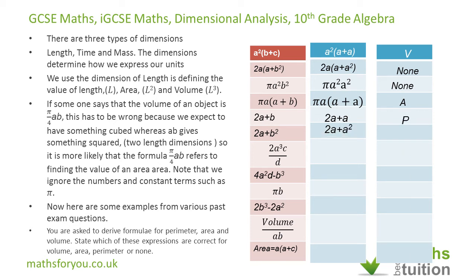For the next one, we have 2A (a length term) plus A squared (an area term). Since this mixes dimensions, it is not valid for perimeter, and not valid for area either. So the answer is none.